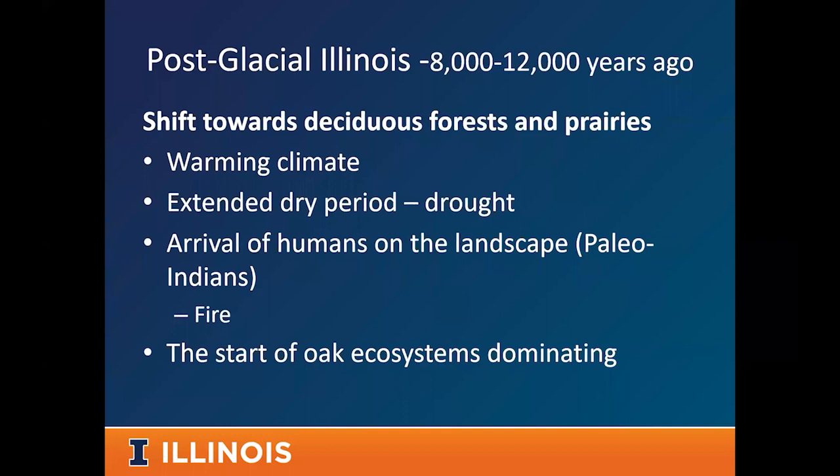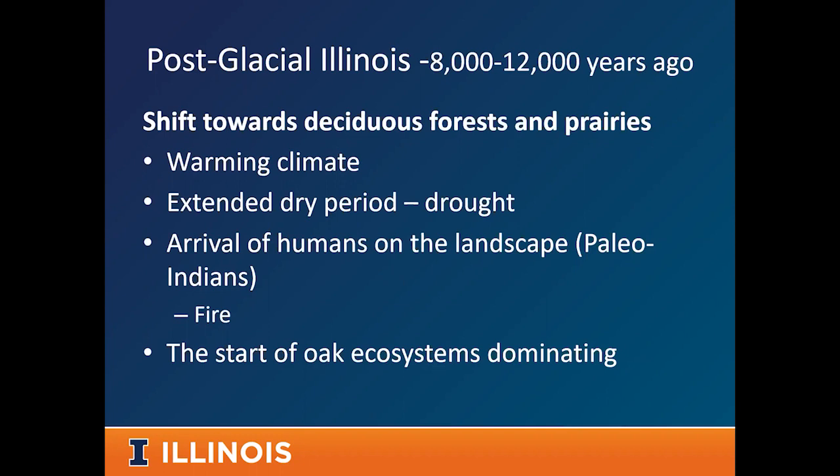At the same time as this drying and warming period and the start of the deciduous forest, this is also around when humans first showed up in Illinois. With them, fire came along, and fire has a drastic influence on how our forests developed over time. This super drought also extended the grasslands — previously restricted to the rain shadow east of the Rocky Mountains, these very dry conditions pushed grasslands much farther east and throughout Illinois. This was the development of our tall-grass prairies, which is why we have prairie all the way into Ohio and parts of Kentucky — from these drought conditions and the anthropogenic use of fire. Illinois at this time was shifting to oak-dominated deciduous forest while also seeing the arrival of tall-grass prairie ecosystems.